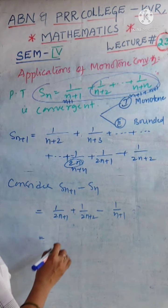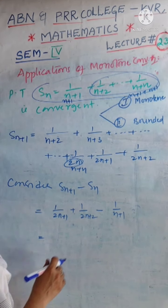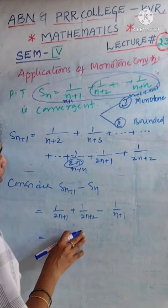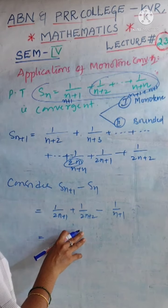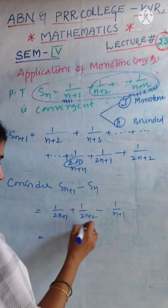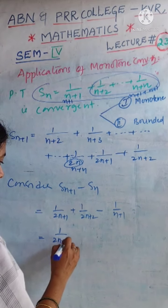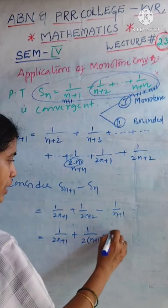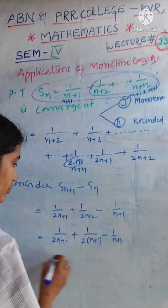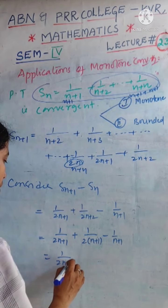So, is this value positive or negative? Let us observe. Here, we are combining the terms: 1 by 2 into n plus 1 minus 1 by n plus 1, which is equal to 1 by 2n plus 1.